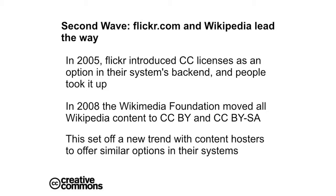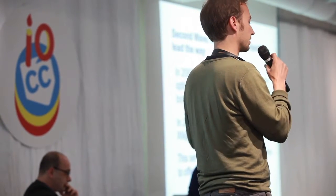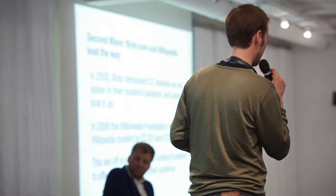Then the second wave came — private institutions such as Flickr and the Wikipedia community, which led the way toward scaling CC. In 2005, Flickr introduced CC licenses as an option for their users in the backend, and many took it up. In 2008, Wikipedia moved its whole content to CC licenses — CC BY and CC BY-SA. This set off a whole chain of such moves, so that suddenly not only individual people but whole curating and hosting institutions put open licensing as an option in their systems.